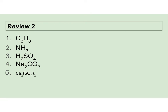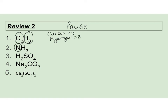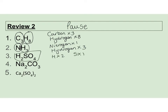Have a little review and work out what is in these compounds. Pause the screen and I'll put the answers up in a minute. So we've got three carbons and four hydrogens. Remember to use your periodic table to work out the elements. We've got one nitrogen, and hydrogen times by three.